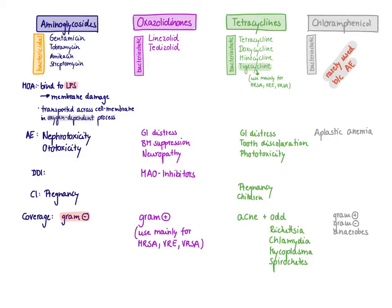First of all, aminoglycosides like to bind to LPS, because aminoglycosides are positively charged and LPS is negatively charged. If you remember that, you can also predict which kind of bacteria they act against — namely gram-negative bacteria, because only gram-negative bacteria have LPS.